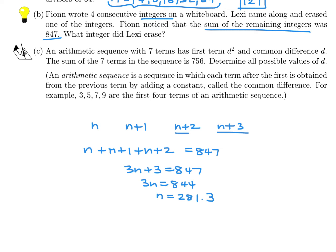Let's decide to remove this guy. So we're going to keep n, n+1, and n+3. That is 847. So when you do this math, it's 3n + 4 = 847, and therefore 3n = 843, so n = 281. This time we get an integer. So that's good. That means this assumption was correct. So if n is 281, then this was 281, this was 282, this was 283, and this was 284. So the one we removed, what integer did Lexi erase? This was the 283.